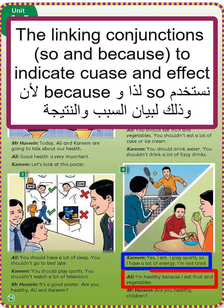والثانية: I am healthy because I eat fruit and vegetables — أنا بصحة جيدة لأنني آكل الخضار والفواكه. فاستعملنا because لحتى نبين السبب. واستعملنا so لحتى نبين النتيجة. يعني: so = لذلك، because = لأن.